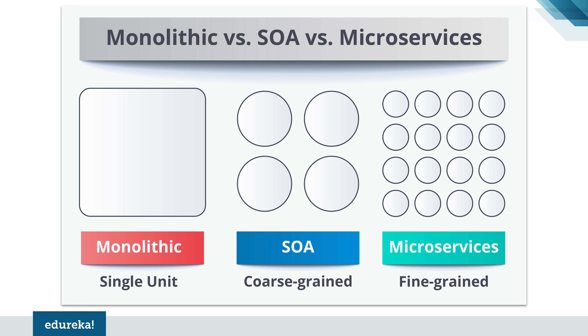So that is what the differences are between these three architectures on a high level. Now let me go into more details about the differences between SOA and microservices.